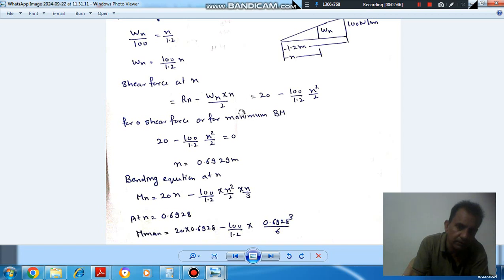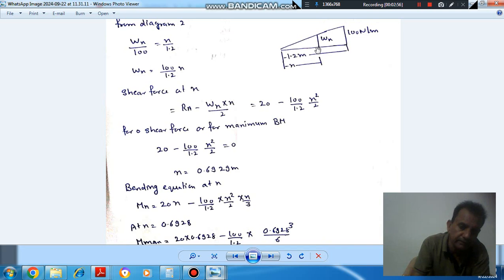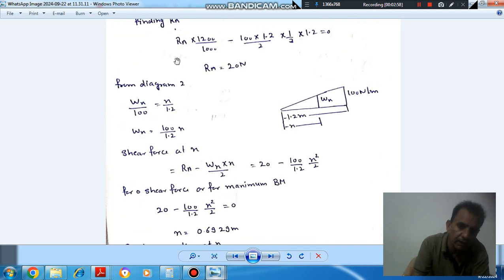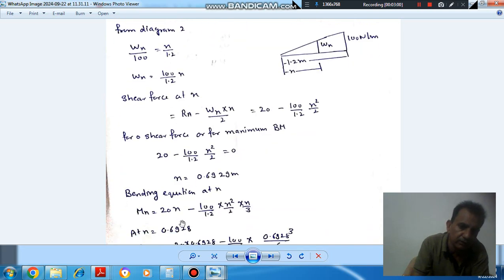So we will find out the equation of bending at distance x and put x equal to 0.692, and then we can find out maximum. So here at distance x the bending moment is Ra into x. Ra is 20, so 20 into x.